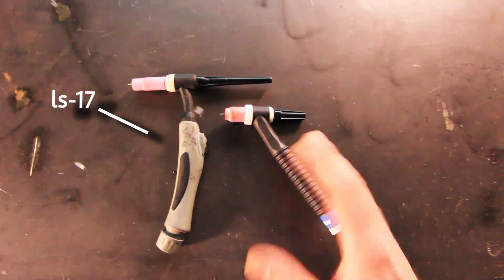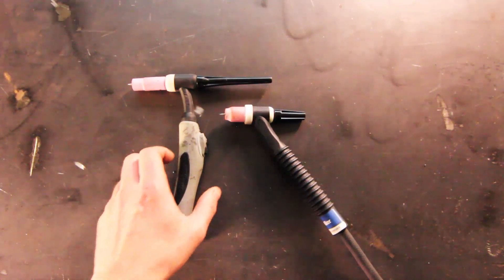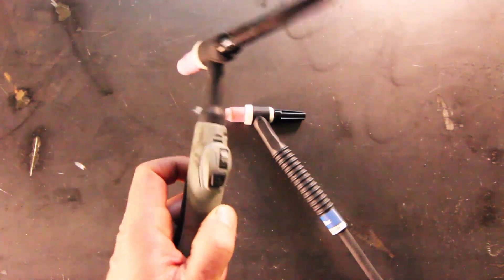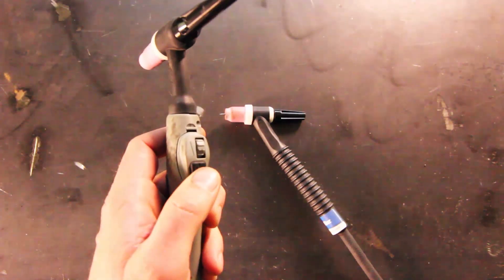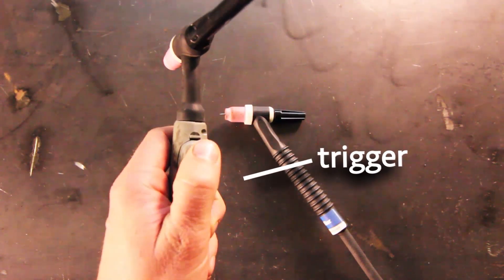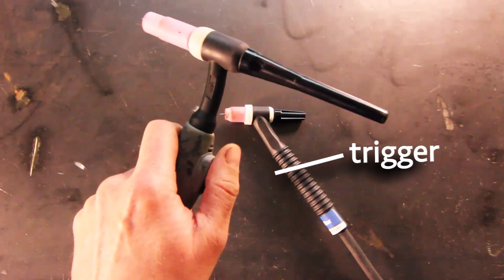You can also see this button here, which is essentially your trigger. If you hit it once, the arc will come on, then you hit it again and it'll shut the arc off. Or you have the option for using it like a trigger where you hold it down, the arc continues, and when you release it shuts off.